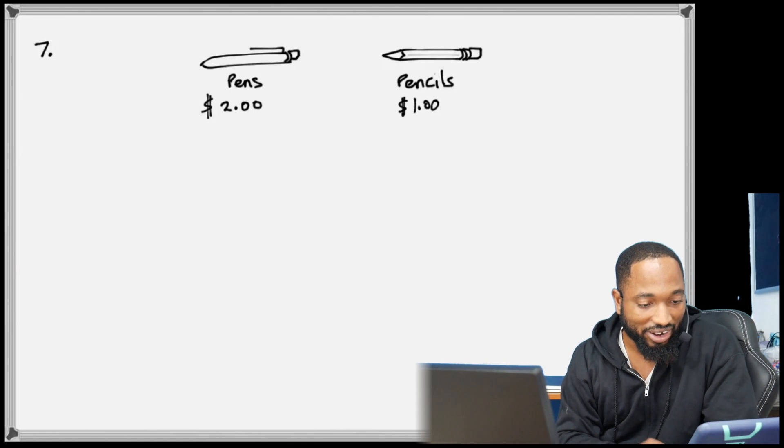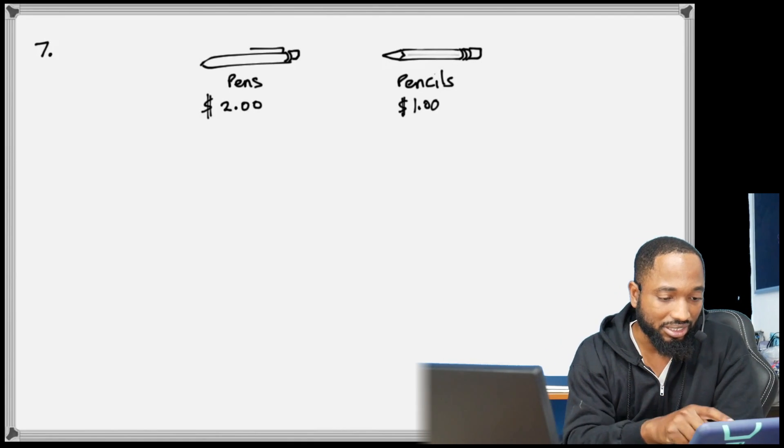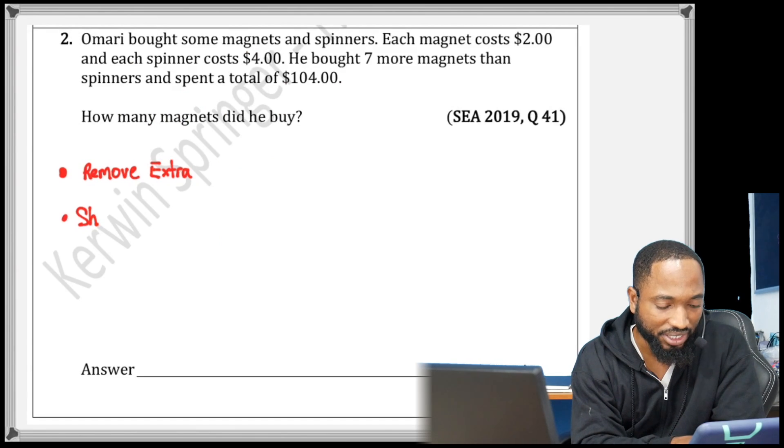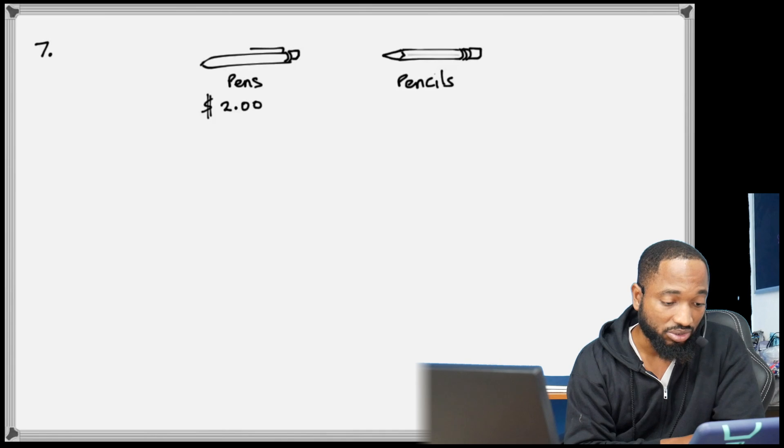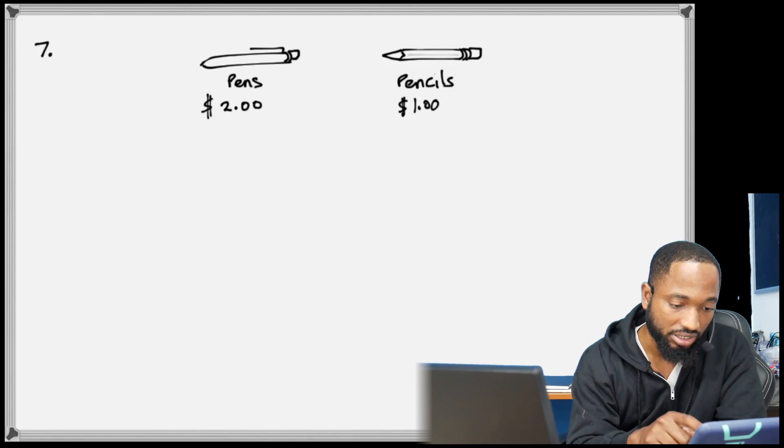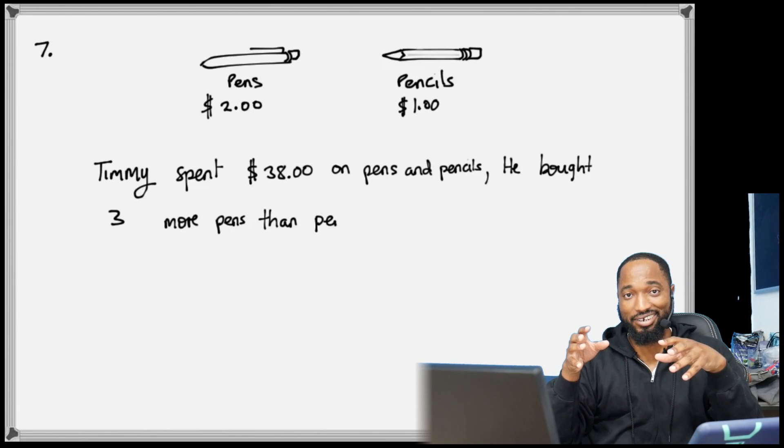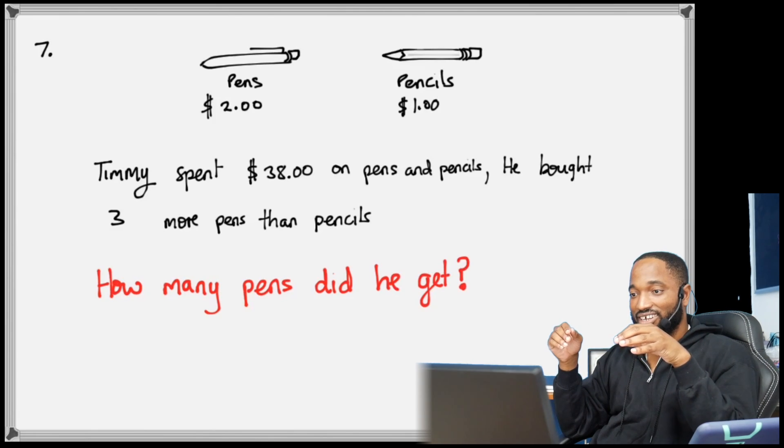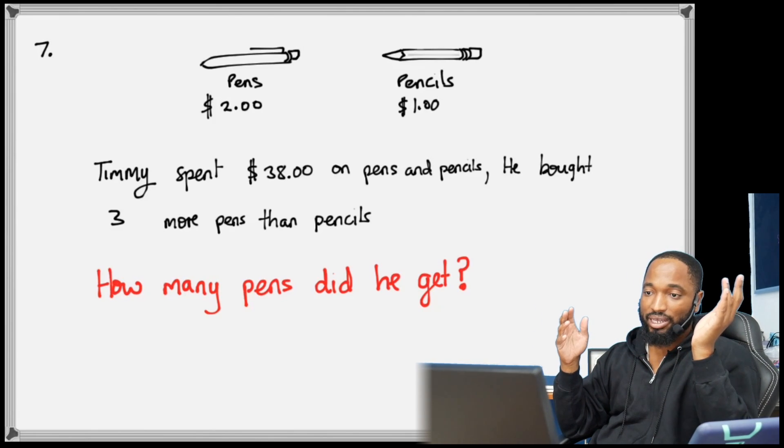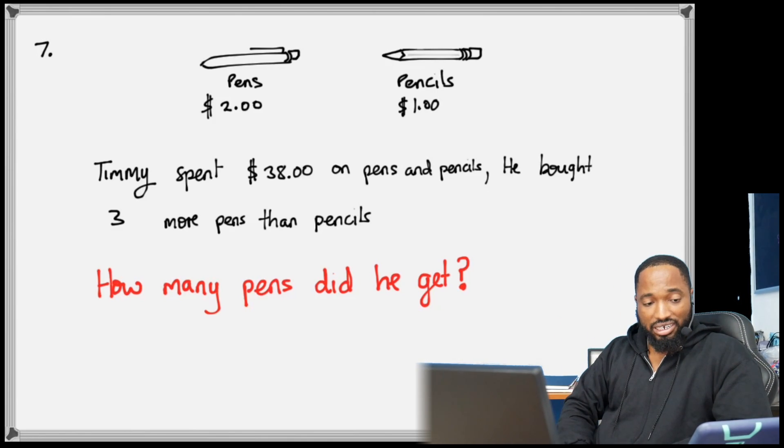So you can do it again, I don't know why I have it as number six. Okay, we did that already. Next question. All right, so I just wrote this one just before I shoot the video to give a little... because just like the one that came last year with money on the item, this question is similar to that. You can have a little fun with this question. Pens and pencils costing a certain sum of money. Timmy spent $38 on pens and pencils. He bought 3 more pens than pencils. How many pens did he get?